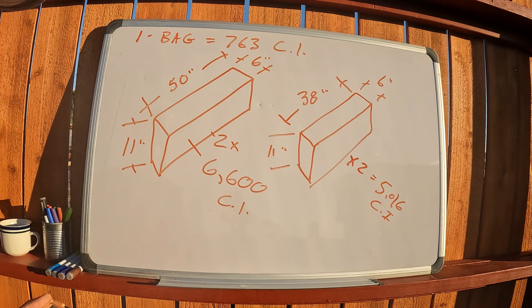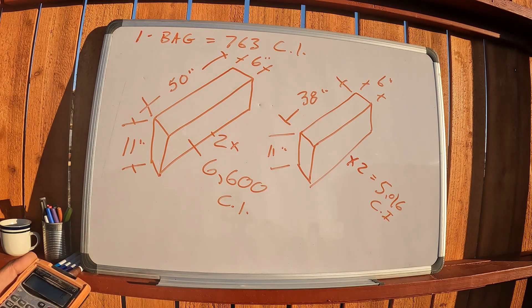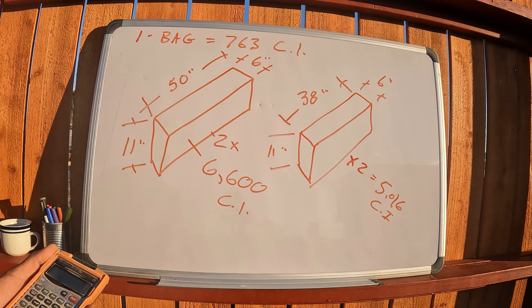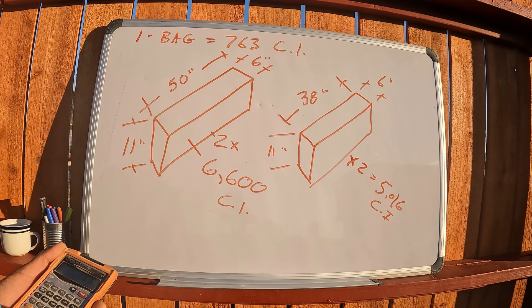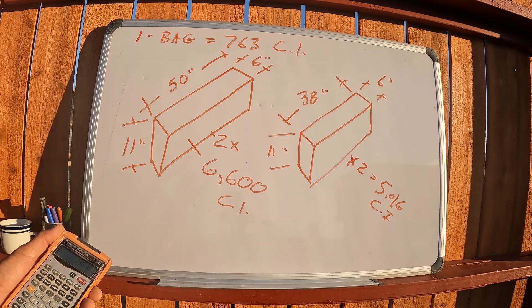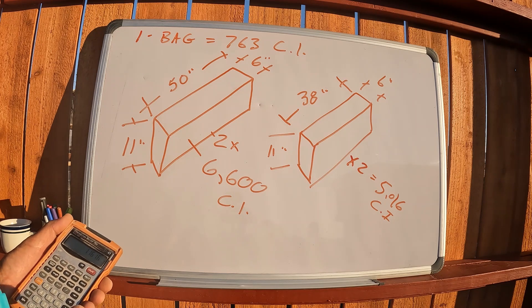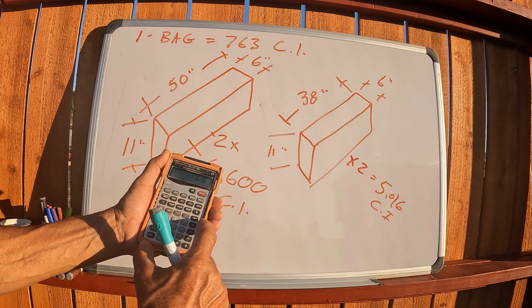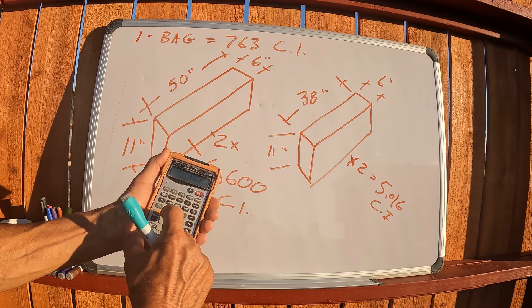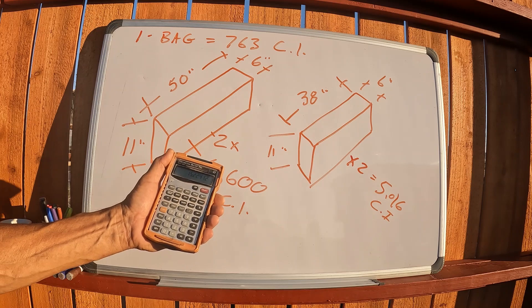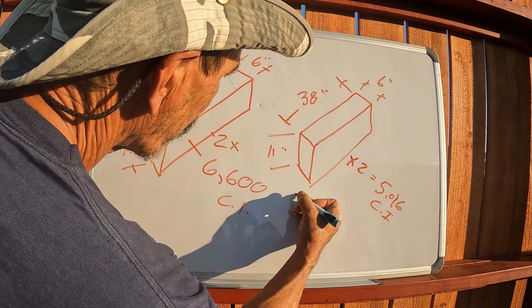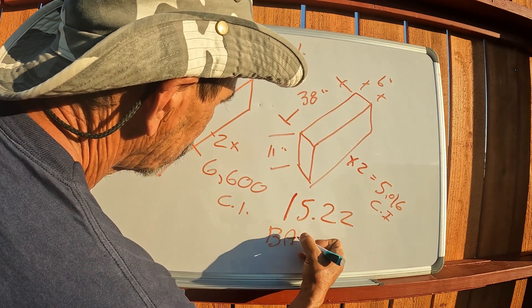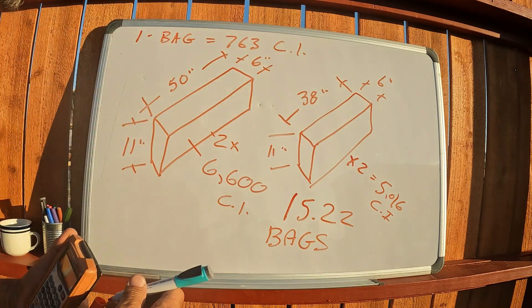Let me double check. Yeah, 6600. So 6600 plus 5016, there's 11,616. I've already did the math, I think I came up with 16 bags, 15 or 16 bags. So we've got 11,616 cubic inches for my next pour divided by 763, 15.22 bags. I've got like 19 or 20.